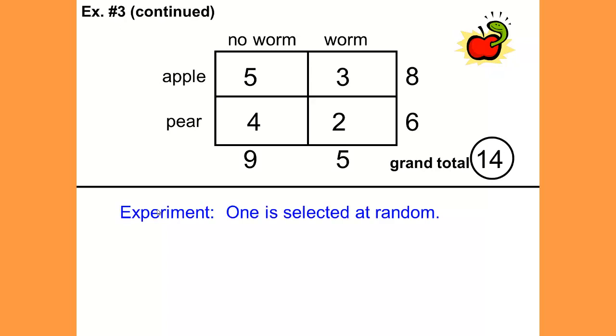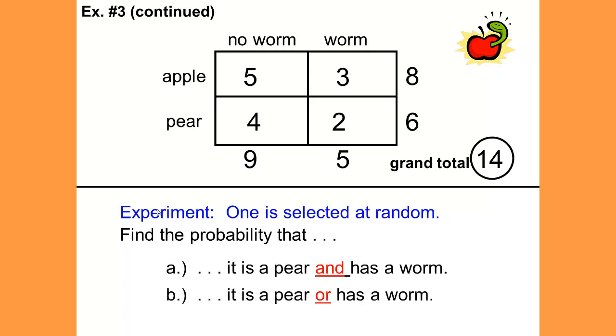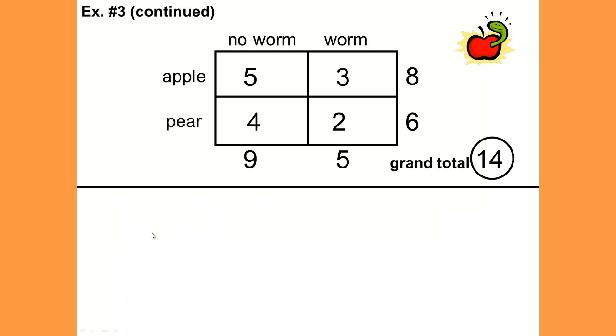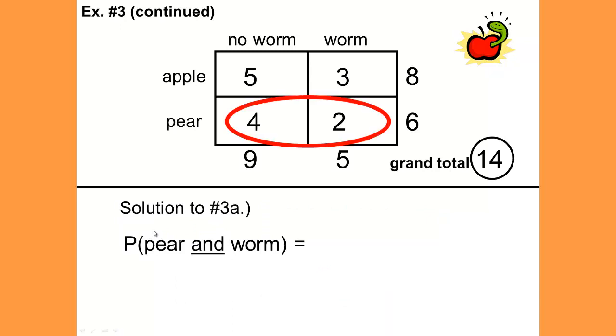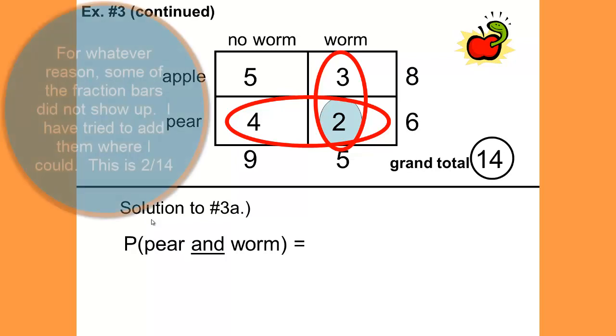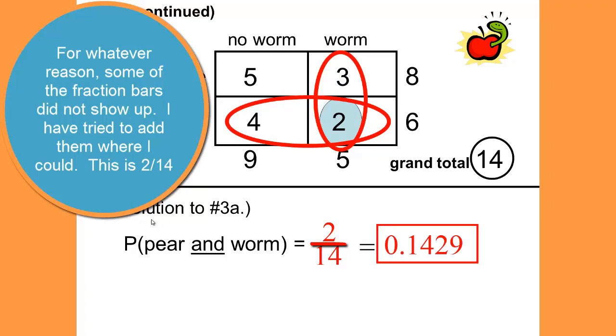Our experiment is one is selected at random. Find the probability that it is a pear and has a worm. We have circled the pears. We will circle the worm. And is the overlap or intersection of these groups, and that would be the 2. We have 2 that are both a pear and have a worm. So that would be 2 out of 14 or .1429.